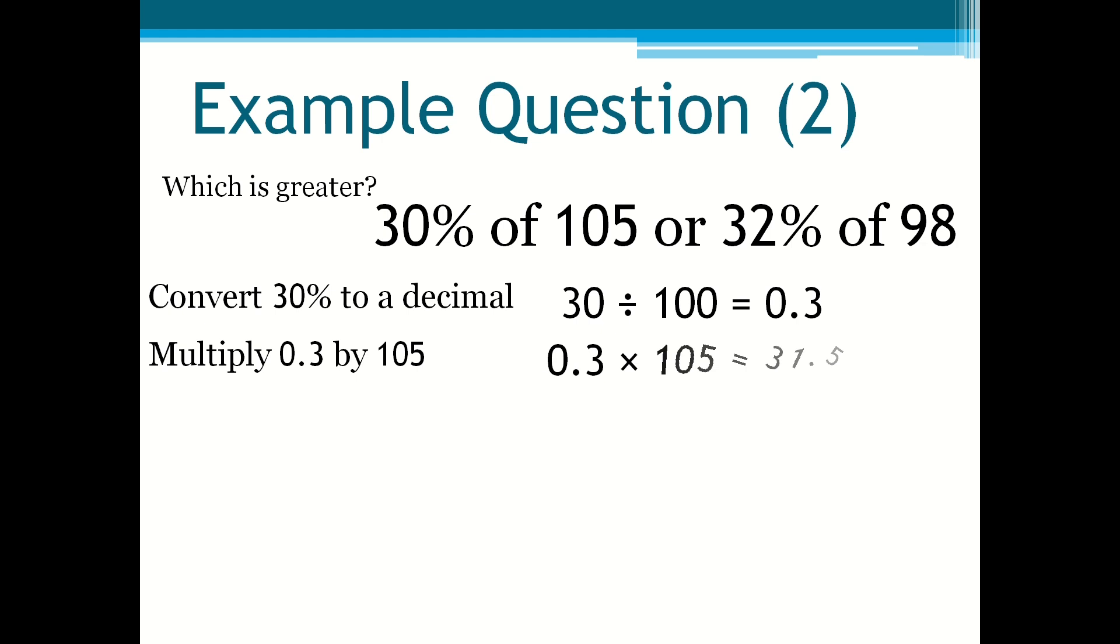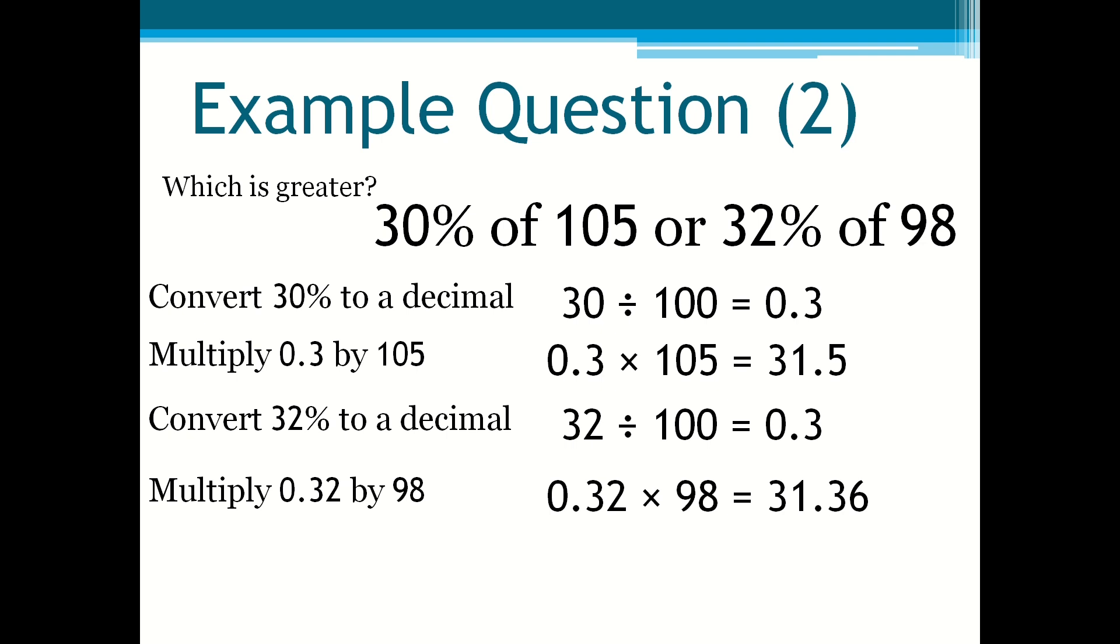Then you convert 32% to a decimal, which will be 0.32. Then you multiply 0.32 by 98 and you get 31.36. And then you can write it as a comparison. So 31.5 is greater than 31.36.